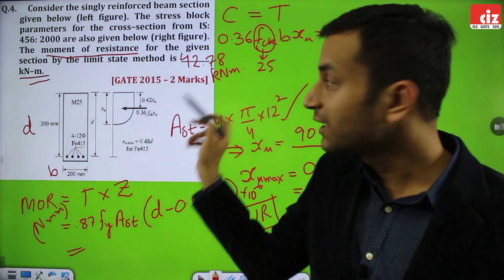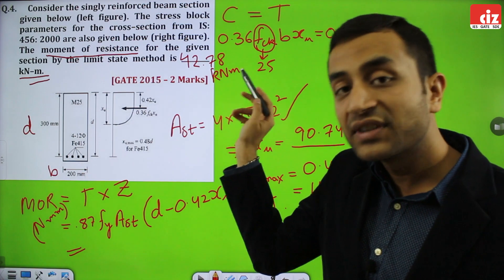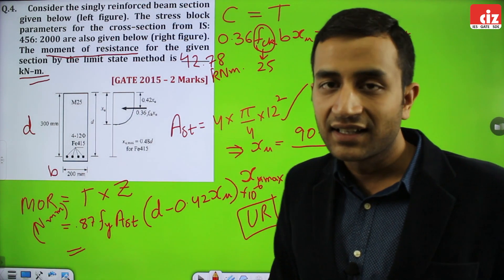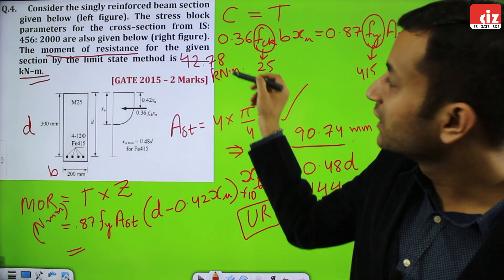42.78 kilonewton meter. For numerical answer type questions, it is highly recommended that you write the answer correct up to 2nd decimal. Only then you will be awarded correct answer.